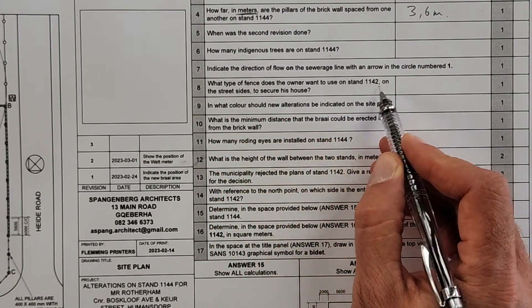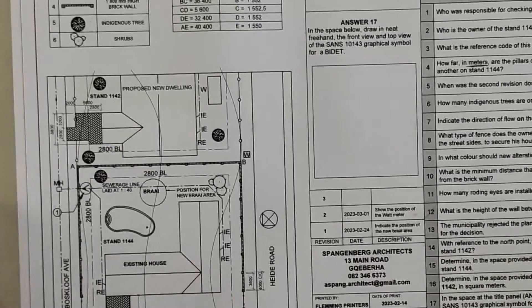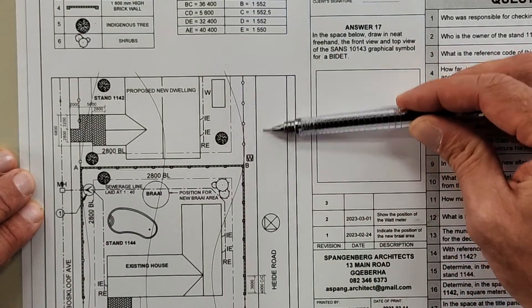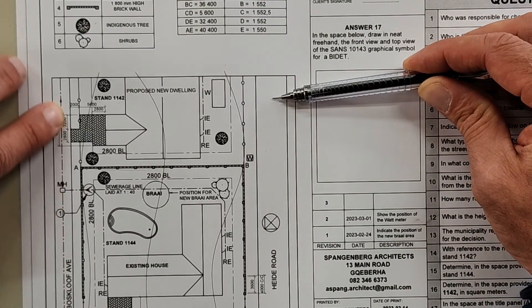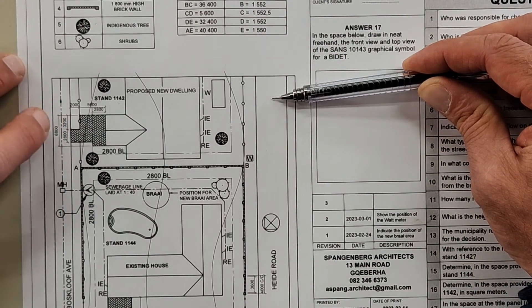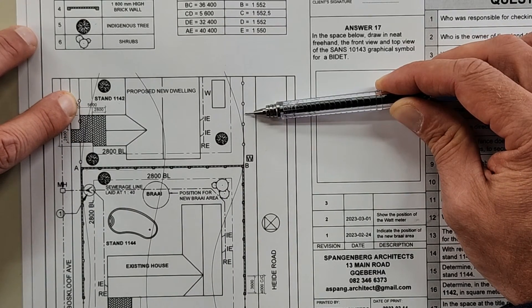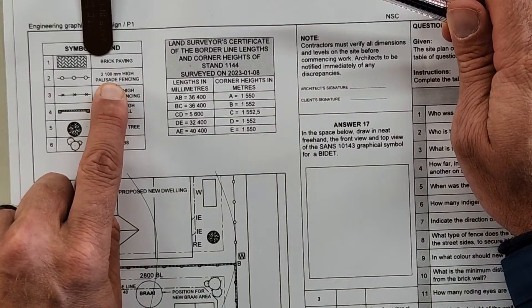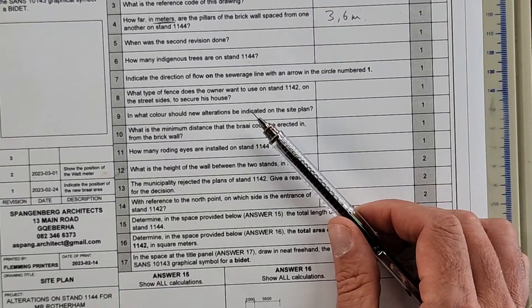What type of fence does the owner want to use at stand 1142 on the street side to secure the house? The street side is here — we have Hayder Road and Boscliffe Avenue. It is palisade fencing, and the height is 2100 millimeters.